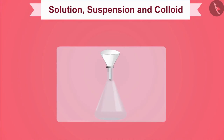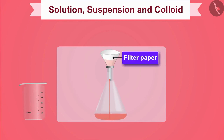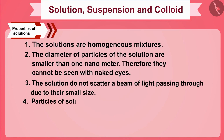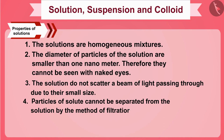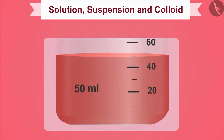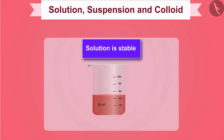If we try to separate iodine from this tincture of iodine solution using filter paper, we cannot succeed. Therefore, the particles of solute cannot be separated from the solution by filtration. And if we keep this solution undisturbed, the solute iodine particles do not settle down — meaning the solution is stable.